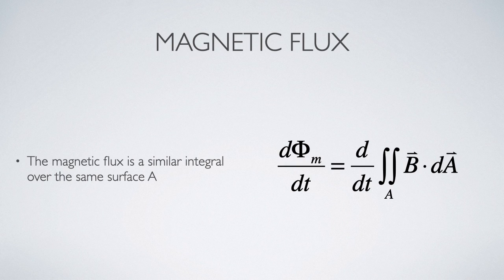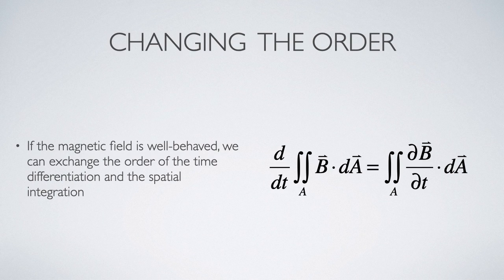Or, if our vector field has a nice property called doubly differentiable, which means that it's well behaved and our coordinate system isn't time dependent, then because our integration is over coordinates and our differentiation is over time, that means we can swap the order of them. And of course when that happens, we end up with a partial derivative with respect to time rather than a complete derivative.